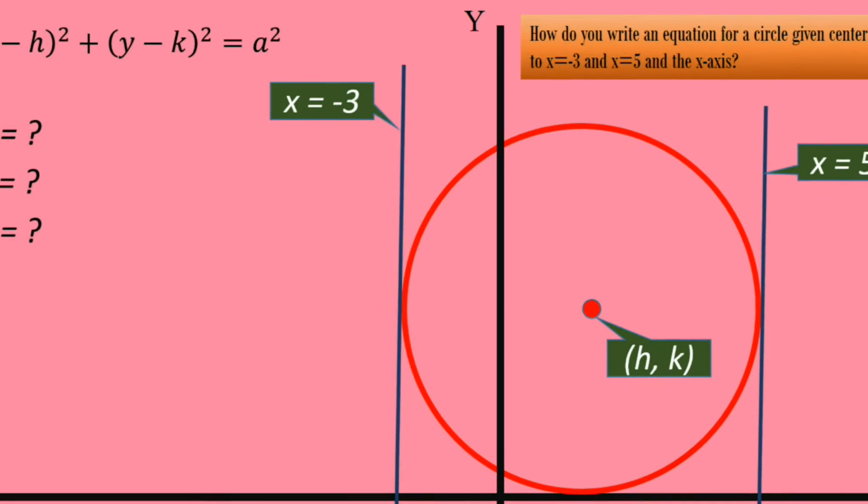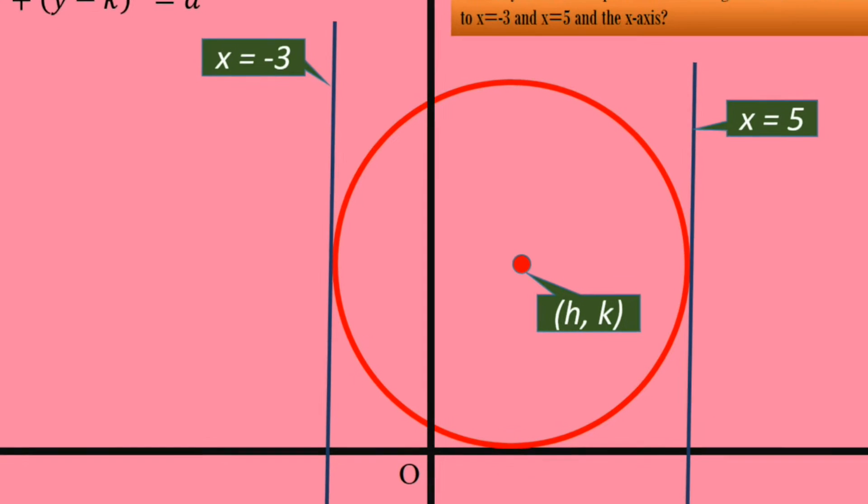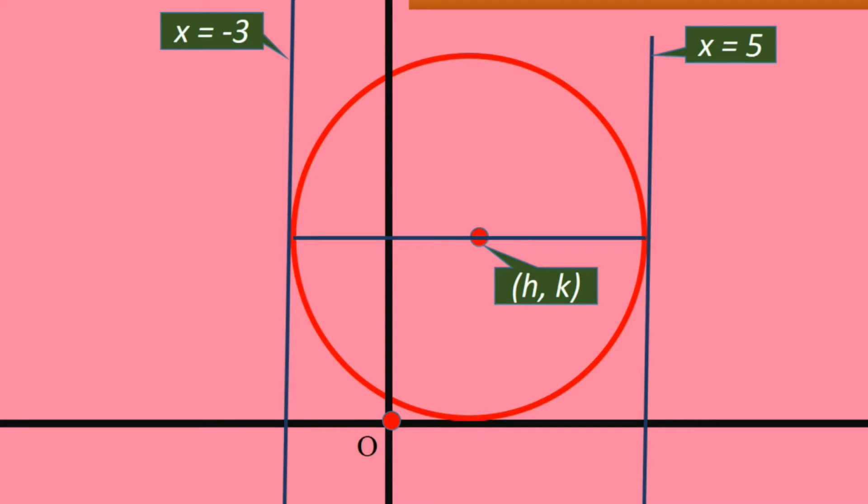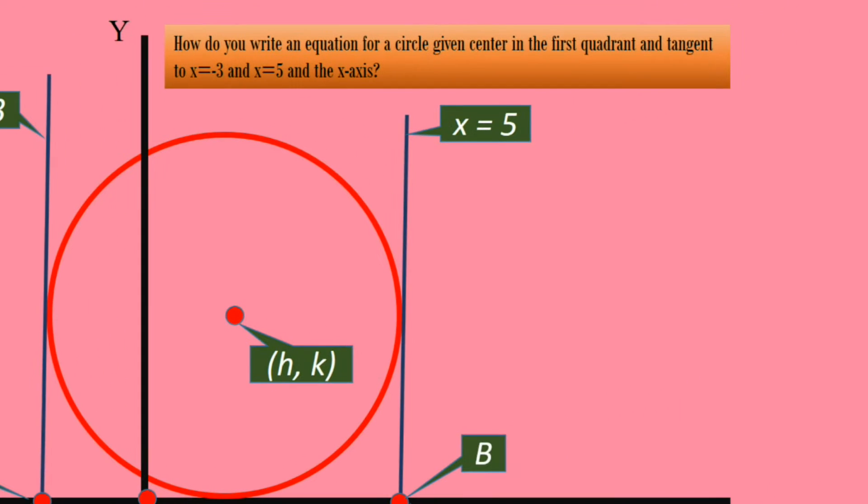From the two vertical tangents, we can find out the diameter of the circle. The diameter of the circle is the horizontal distance between the two vertical tangents. For the sake of our convenience, we shall take the points A and B along the x-axis. At B, the coordinates are (5,0) and at A, (-3,0). With this, we can easily find out the distance between A and B, which is the diameter of the circle.